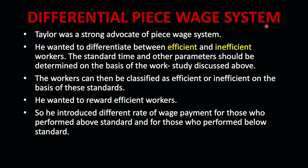Before talking about this differential piecewise system, if I ask you that in one organization, if we provide two different types of wage rates for two different types of workers, is it justified? Obviously, your answer would be no. But Taylor was of a different opinion and he strongly advocates the piece wage system where he says that there are two types of workers — one is efficient, another is inefficient — and both should not be given the same type of wages. So he suggested two different wage rate systems for efficient and inefficient workers.